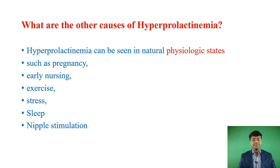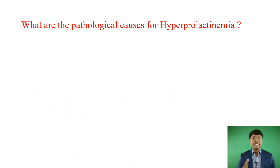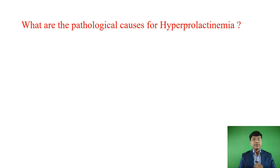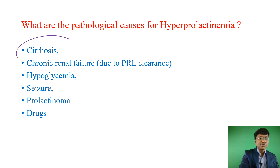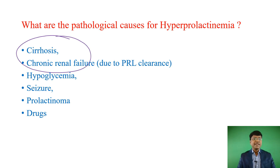The pathological causes for hyperprolactinemia include systemic causes, drugs, and certain tumors. The systemic causes include cirrhosis of liver and chronic renal failure. In chronic renal failure, prolactin — after being metabolized in the liver — must be excreted through the kidney. If there is chronic renal failure, prolactin accumulates in the body, resulting in hyperprolactinemia. Other causes include hypoglycemia, seizures, and tumors such as prolactinoma.